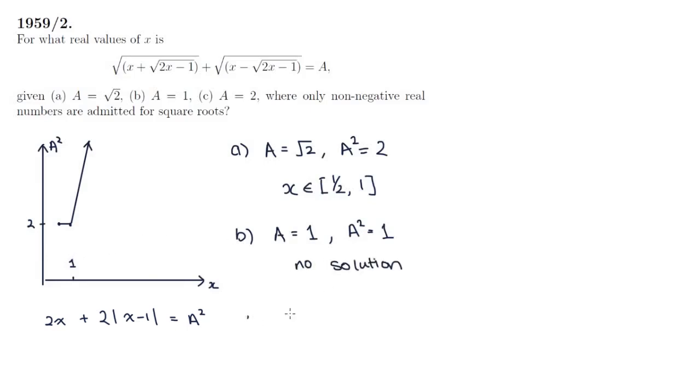And finally, part c, when a is equal to 2, a squared is equal to 4. This occurs somewhere up here. So let's draw that in. And let's recall that the equation for that part of the graph is 4x minus 2 is equal to a squared. And here we're given that a squared is 4. So we know that 4x minus 2 is 4, substituting 4 into a squared. And simplifying that, we have 4x is 6, and x is equal to 3 on 2, which is 1.5. And looking at the graph, we can confidently say that this is a unique solution.